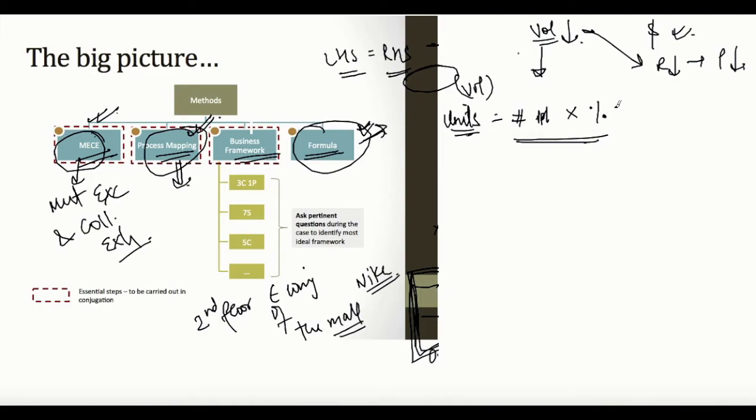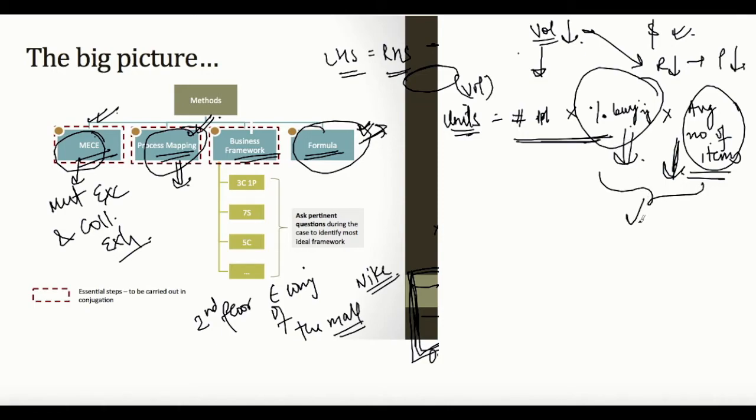So what I had here was total number of people entering my shop times percentage of them who are buying something times average number of items bought. My overall volume from that one shop is going to be a function of this. If I figure that my average number of items are going down or the percentage of customers that I'm able to turn into buying something is going down, then perhaps this would suggest that sales force is an issue or some store-specific issue. But in this case, I had these two as fine, and I had number of people as a problematic step.